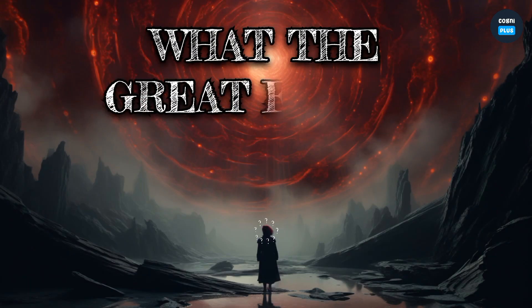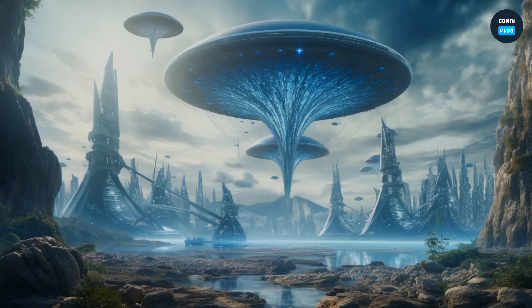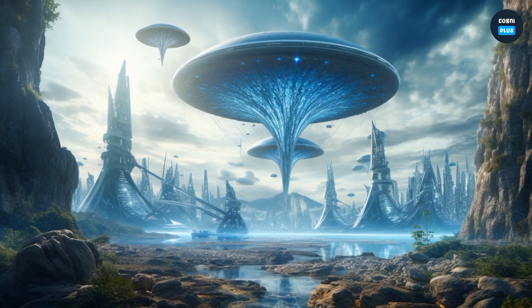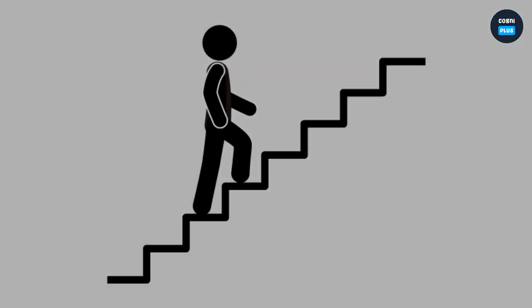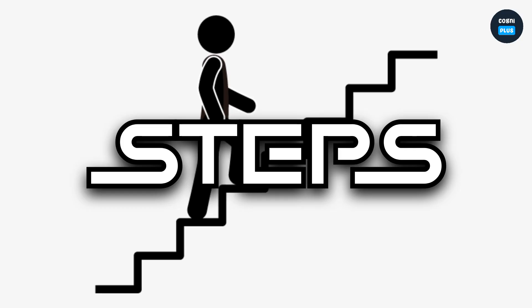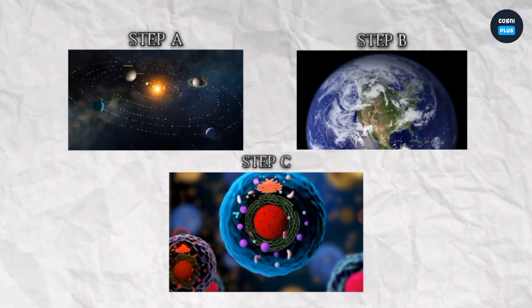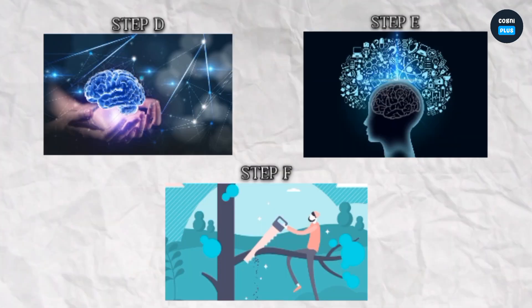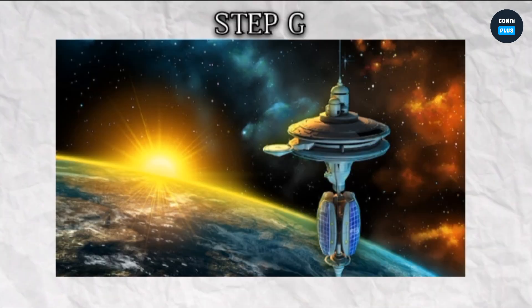The absence of extraterrestrial civilizations might mean one of these steps is very unlikely. If it's one of the early steps — A, B, or C — we've already passed the Great Filter. If the unlikely step is one of the later ones — D, E, F, or G — the Great Filter is still ahead of us.